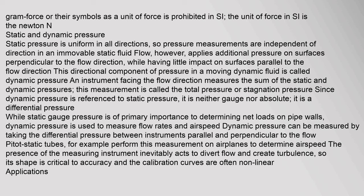Static pressure is uniform in all directions, so pressure measurements are independent of direction. In a moving fluid flow, however, fluid applies additional pressure on surfaces perpendicular to the flow direction, while having little impact on surfaces parallel to it. This directional component of pressure in a moving dynamic fluid is called dynamic pressure. An instrument facing the flow direction measures the sum of the static and dynamic pressures, called the total pressure or stagnation pressure. Dynamic pressure is a differential pressure; it is used to measure flow rates and airspeed. Dynamic pressure can be measured by taking the differential pressure between instruments parallel and perpendicular to the flow — pitot-static tubes, for example, perform this measurement on airplanes to determine airspeed.